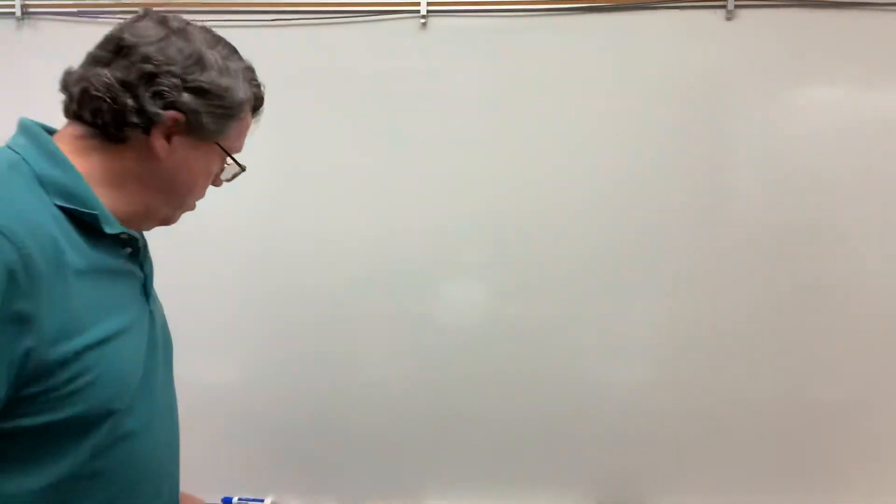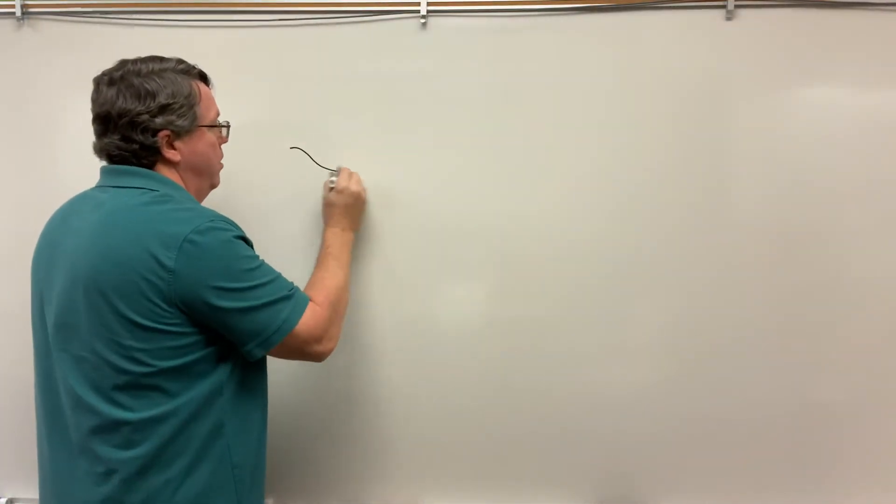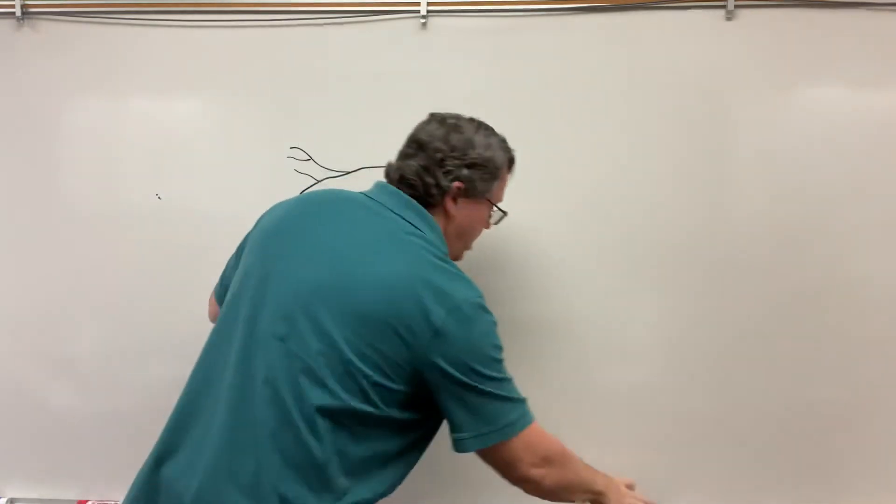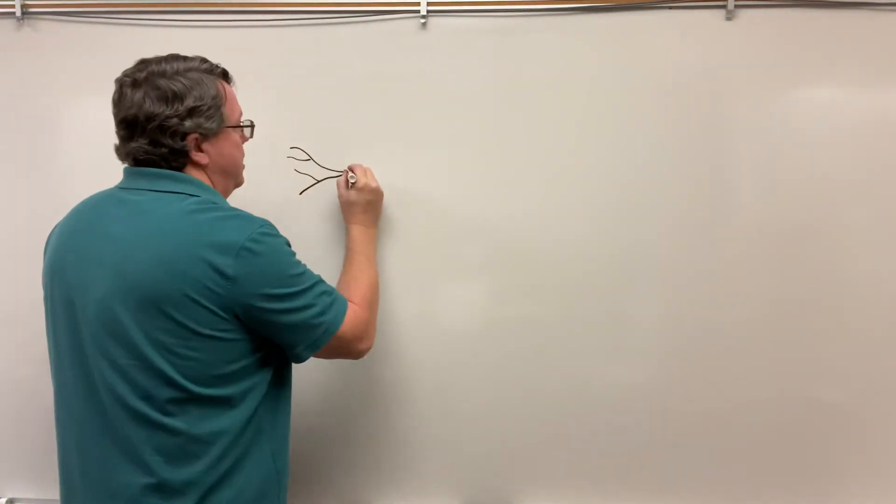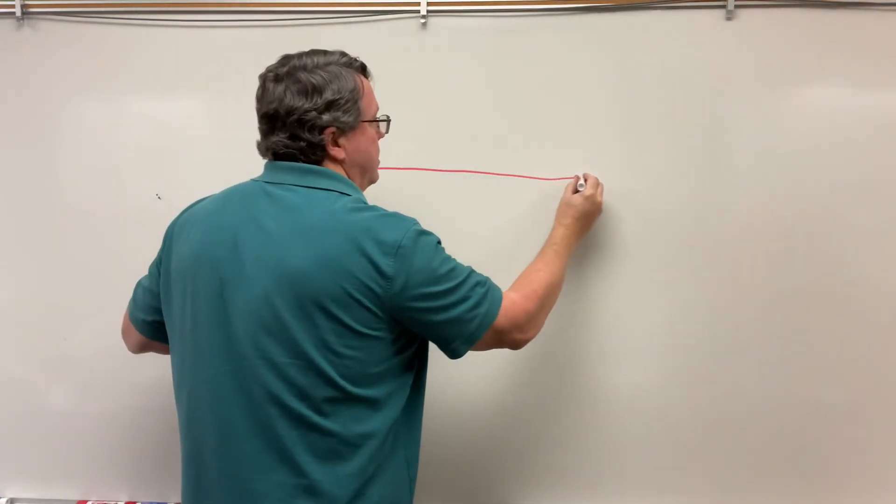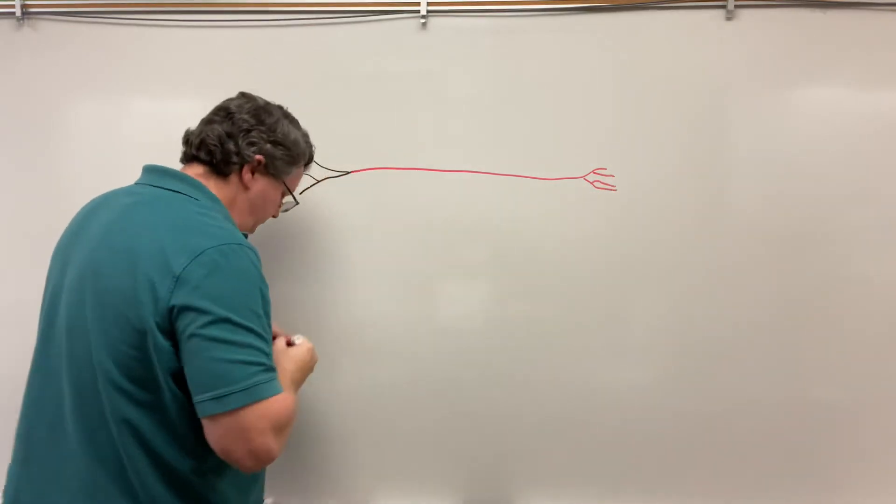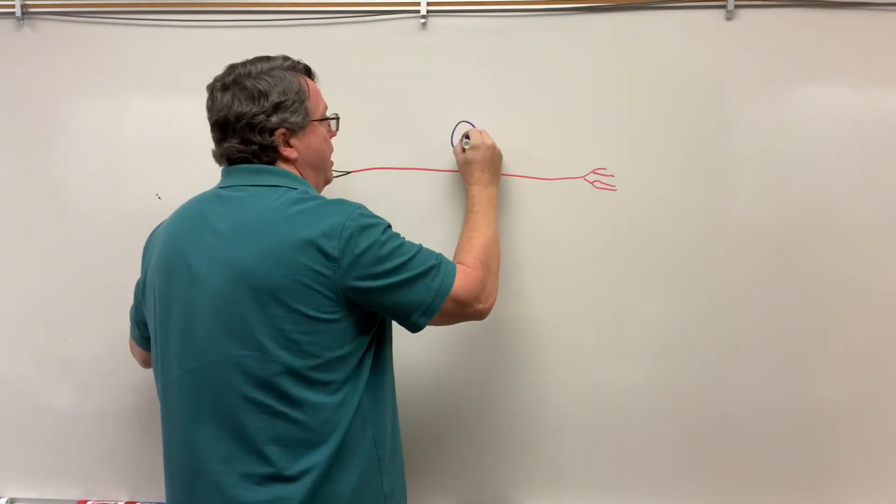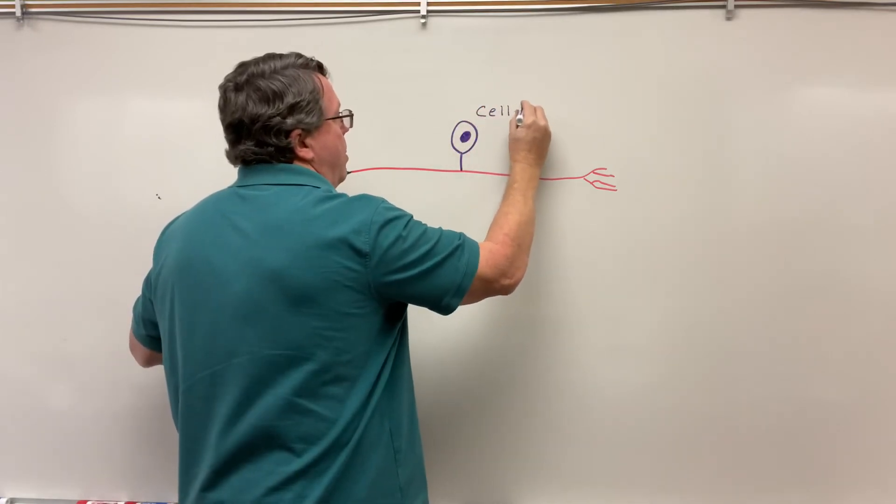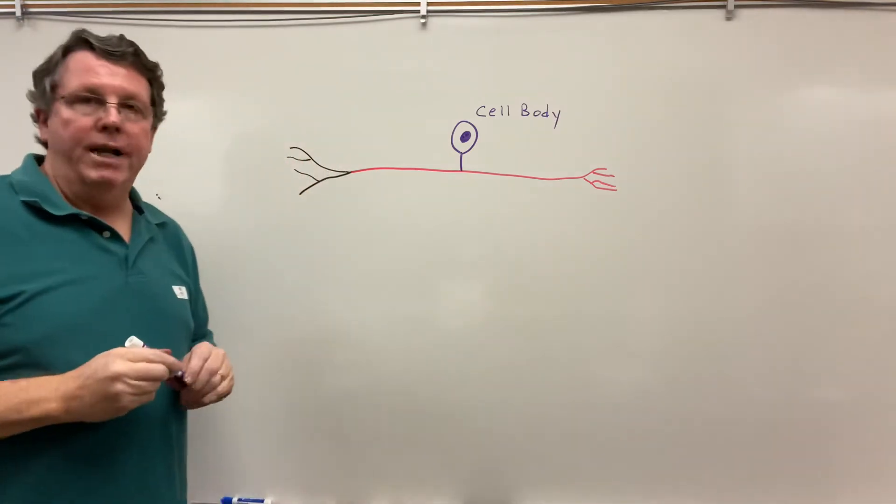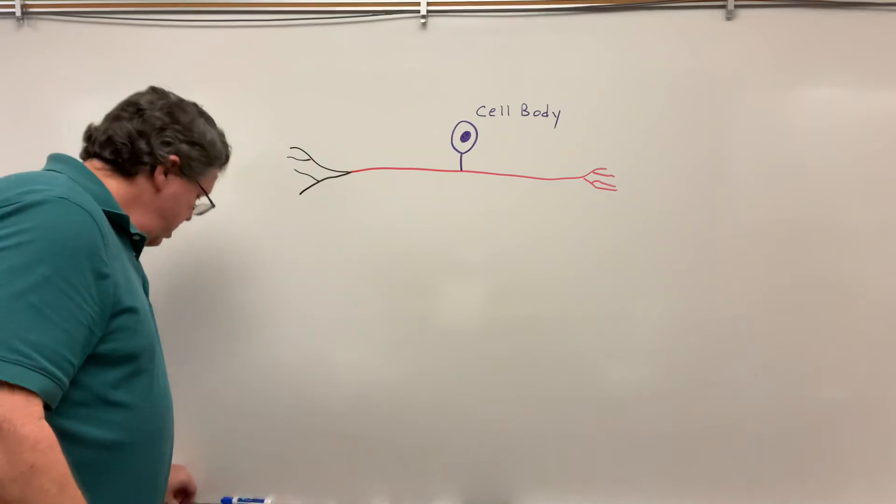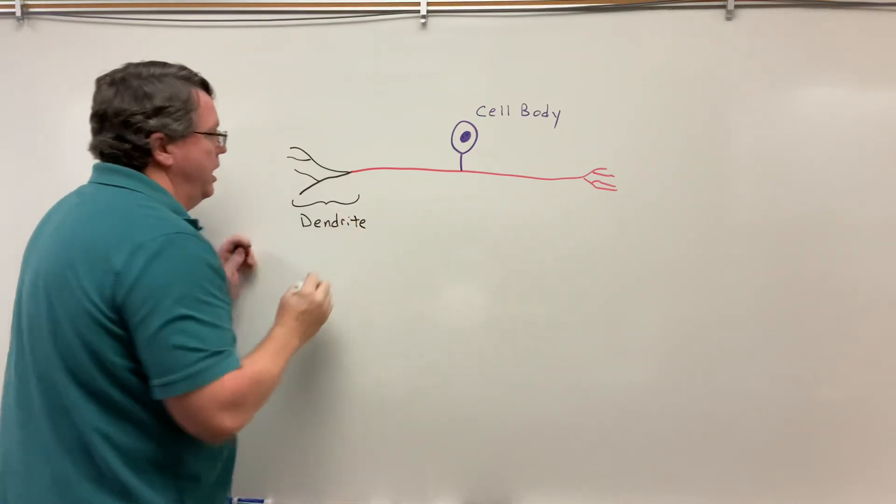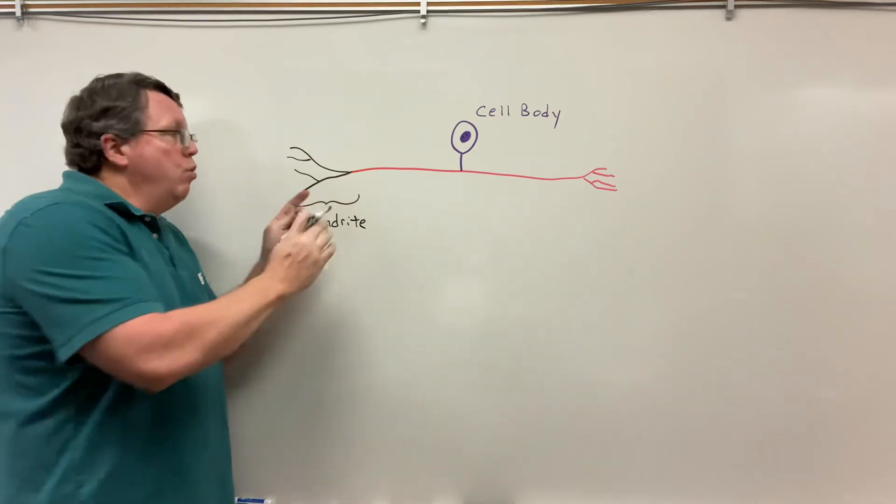The next one is going to be my unipolar nerve. And then what I have coming off of here is my cell body. Now this here is going to be my dendrite. So this is where information is going to come in, from right here.